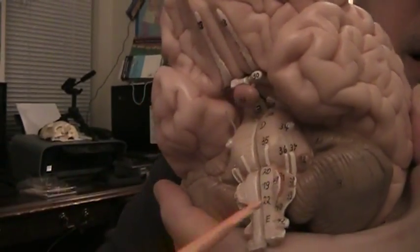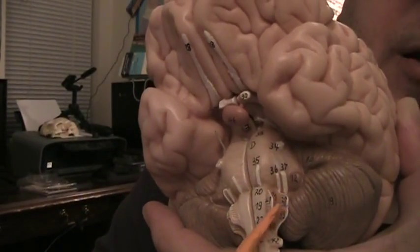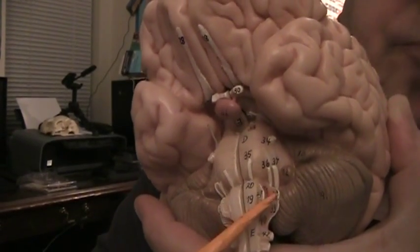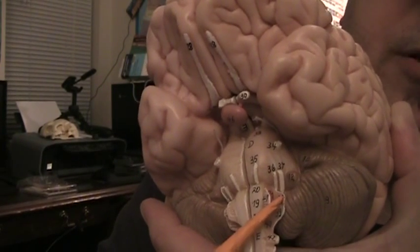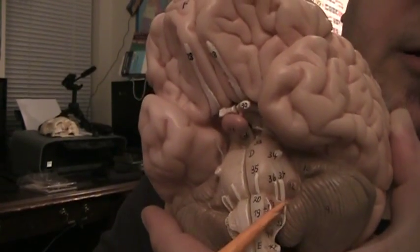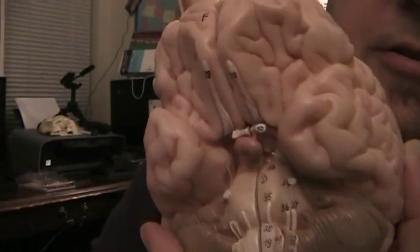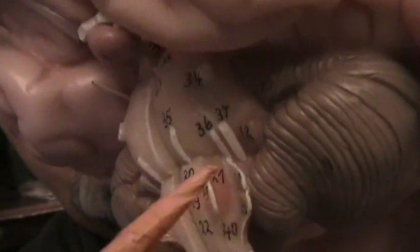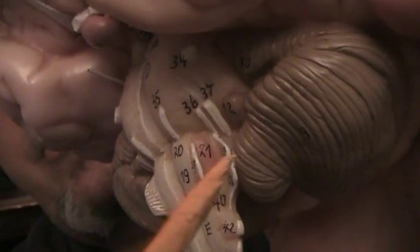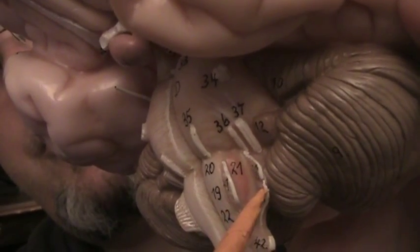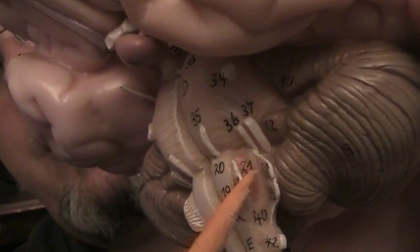9 and 10 are kind of paired together behind the olivary body of the medulla oblongata. Vagus nerve, larger on top. This is cranial nerve number 9 above 10. Cranial nerve number 9 is smaller, 10 is larger on the bottom right there. Glossopharyngeal and vagus nerve.